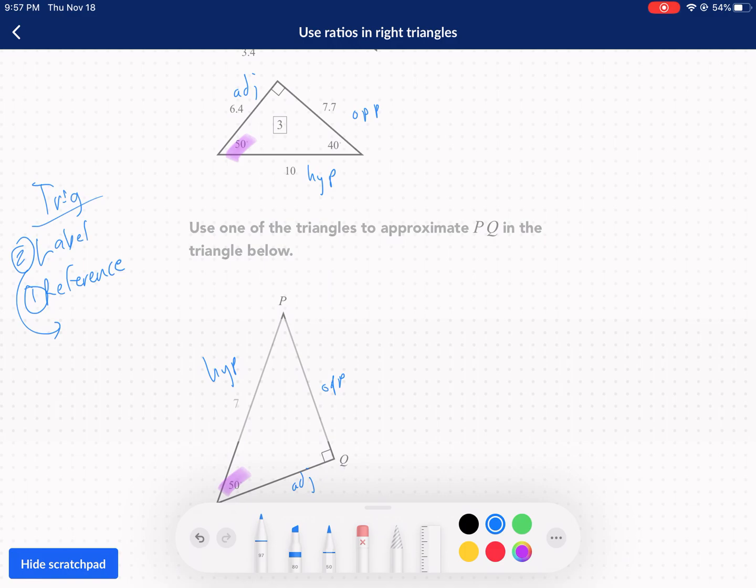We want to approximate PQ in the triangle below. So PQ is the opposite side. We're going to set up our proportion here. We know that this hypotenuse, I'm going to color it red and color this one red. I'm going to color this one green, this opposite side. So I'm going to say my opposite side, 7.7 from this top triangle - it's a similar triangle because it's a 50-degree angle. Over 10.